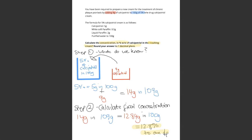Hi guys, question 22. Our answer is 12.8% to one decimal place. So with this question, it's better to draw it out. It'll make life so much easier. So that's what I have done to show you.